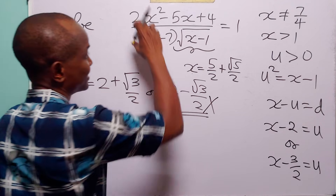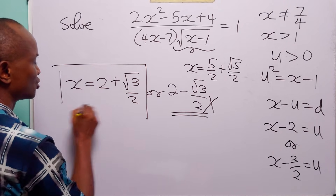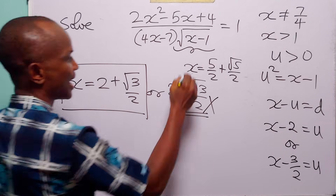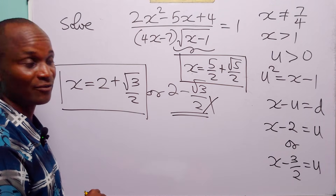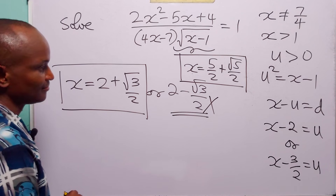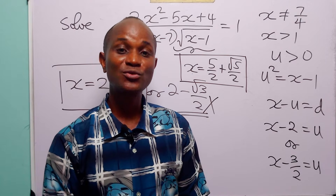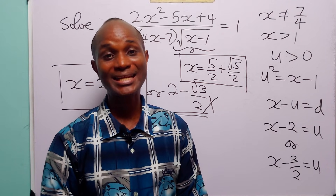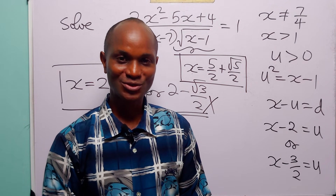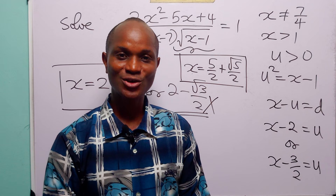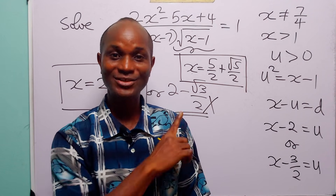The only two values of x that satisfy this rational equation are x equals 2 plus root 3 over 2, and x equals 5 over 2 plus root 5 over 2. This is a long video already, so I leave the check to you — check the two values of x and let me know in the comment section whether they satisfy the rational equation. With that, we come to the end of this tutorial. I hope you learned something new. If you enjoy such content, please subscribe to the channel, leave us a thumbs up to support the channel. Thanks for watching.